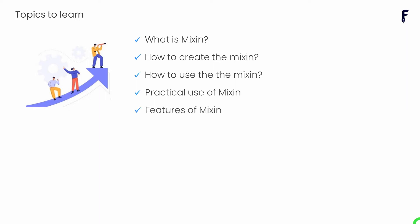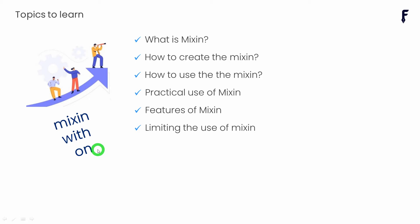After that we'll talk about different features of mixins — the things we can do with mixins and the things we cannot do. At the end of this video I will talk about how we can limit the use of a mixin for specific classes. Understanding mixins involves the use of three different keywords: mixin, with, and on. Without wasting time, let's get started.